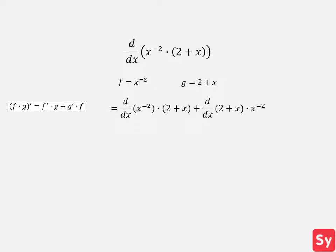This equals the derivative of x to the negative 2 times 2 plus x, plus the derivative of 2 plus x times x to the negative 2. We will first compute the derivative of x to the negative 2. Using the power rule, this equals negative 2 times x to the negative 3. Next, we compute the derivative of 2 plus x. Using the sum difference rule, the constant rule, and the power rule, we get 1.